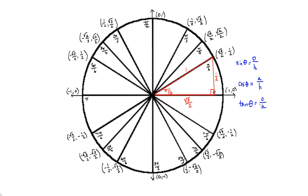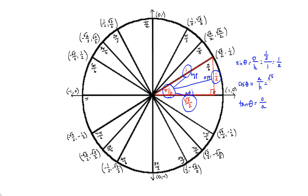So for this angle, the opposite side is 1 half, the adjacent leg is radical 3 over 2, and the hypotenuse is 1. So the sine is my opposite side, which is 1 half, divided by the hypotenuse, which is 1 — that's just plain old 1 half. And cosine is adjacent, radical 3 over 2, divided by 1, which is radical 3 over 2.